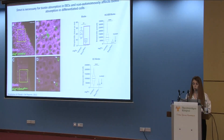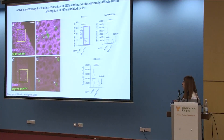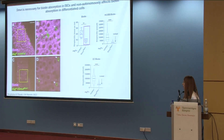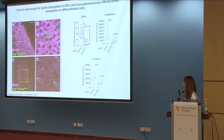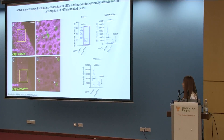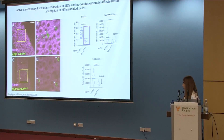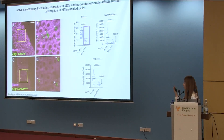To test if SMVT is required for biotin absorption in the midgut, we stained wild-type flies and progenitor-specific SMVT-silenced midguts, and assessed the intensity of the fluorophore streptavidin. Streptavidin tightly binds on biotin, so it reports its presence. We observed a significant reduction in biotin absorption throughout the intestine with a more pronounced effect in the stem cells. However, we also observed a significant reduction in the absorptive enterocytes, and concluded that SMVT not only affects absorption in the stem cells but also has a non-cell-autonomous effect in the absorptive enterocytes.